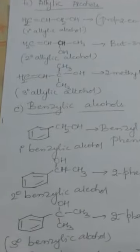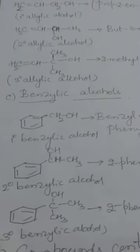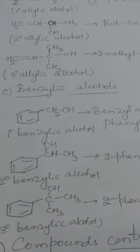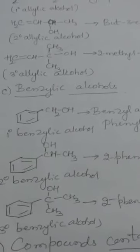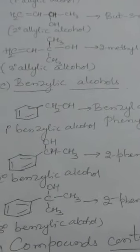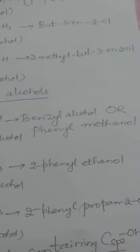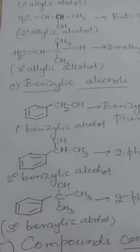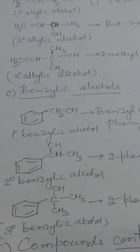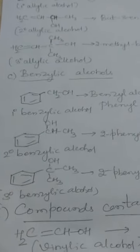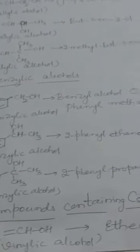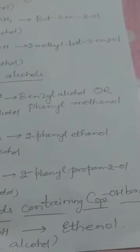The next class is benzylic alcohols. C₆H₅CH₃ is toluene; removing one hydrogen gives C₆H₅CH₂–, called the benzyl group. C₆H₅CH₂OH is a primary benzylic alcohol, also called phenylmethanol or benzyl alcohol. The secondary benzylic alcohol has the IUPAC name 1-phenylethanol, and the tertiary benzylic alcohol is 2-phenylpropan-2-ol.